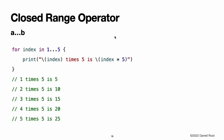Swift includes several range operators, which are shortcuts for expressing a range of values. The closed range operator, a...b, defines a range that runs from a to b and includes the values a and b. The value of a must not be greater than b. The closed range operator is useful when iterating over a range in which you want all of the values to be used, such as with a for-in loop. For more about for-in loops, see Control Flow.